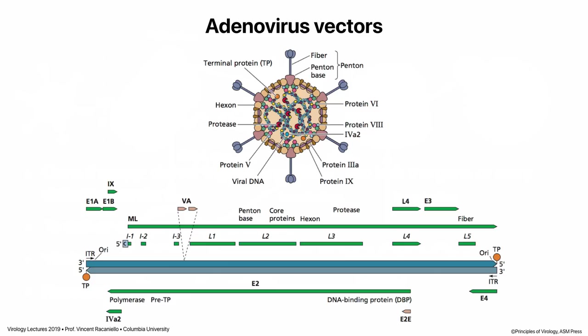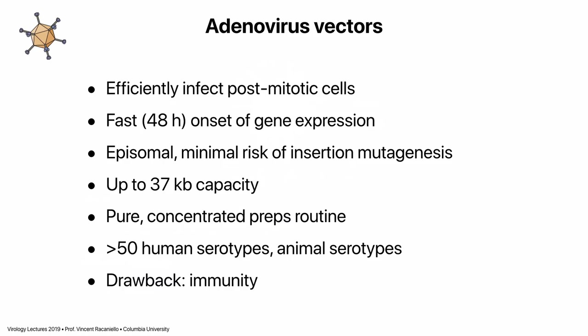Let's go through some of the major viruses used as vectors for gene therapy. We'll start with adenoviruses — one of our favorite viruses in this course. These are large viruses containing double-stranded DNA genomes, recognizable by the fibers sticking out from each five-fold axis of symmetry. We know the sequence, all the proteins encoded, and how it works. Adenoviruses efficiently infect post-mitotic cells — cells that are no longer dividing — which makes up most of the cells in your body.